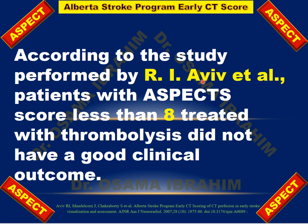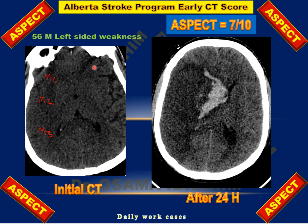According to the study performed by Barber et al., patients with an ASPECTS score less than 8 treated with thrombolysis did not have a good clinical outcome. So if we have a score like the previous case — 7 out of 10 — this has not a good clinical outcome. And indeed, after 24 hours, there were hemorrhagic transformations of the infarction and extension to other areas, because the initial ASPECTS score was 7.